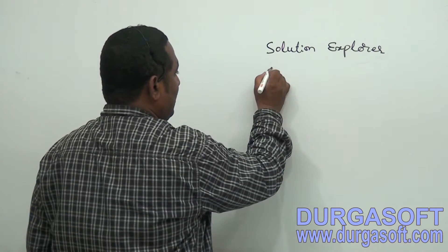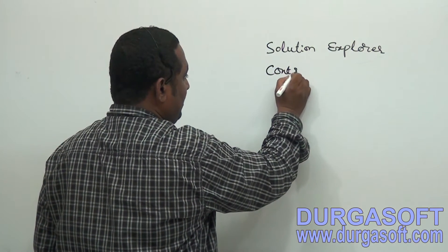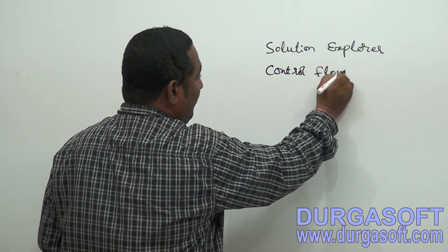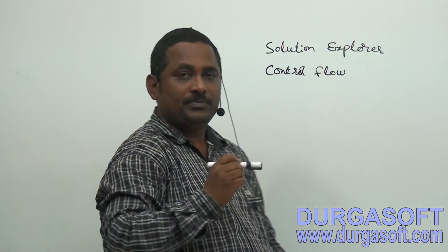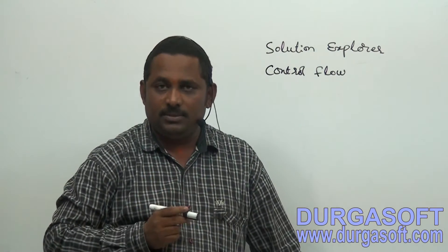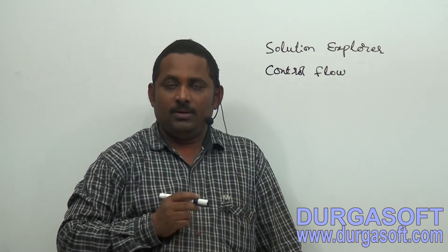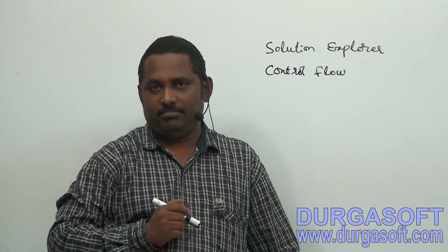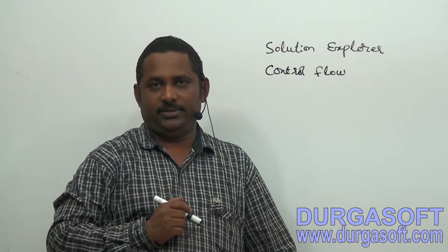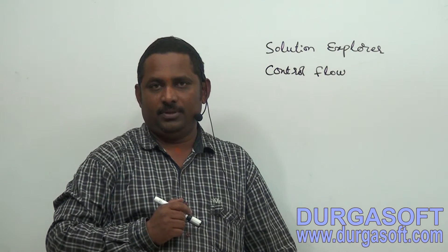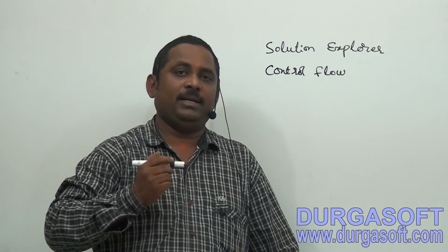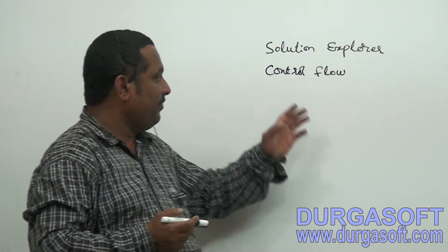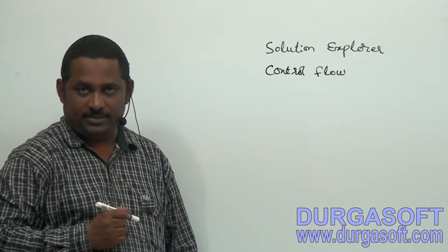The next component is Control Flow. Control Flow contains a set of tasks — these are administration-type tasks, like containers: Sequence Container, For Loop Container, and For Each Loop Container. These are all available in Control Flow.